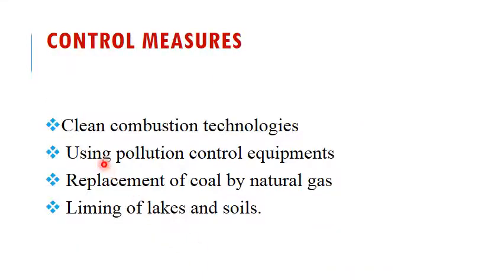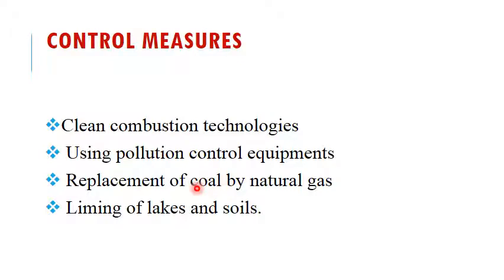The last topic is the control measures of Acid Rain. The first method is using clean combustion technologies to avoid the formation of Acid Rain. The second is using pollution control equipment in industries. The third is the replacement of coal by natural gases, since coal produces a lot of CO2, SO2, and NO2. The last control measure is liming of lakes and soil, which helps avoid the formation of Acid Rain.